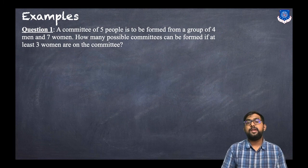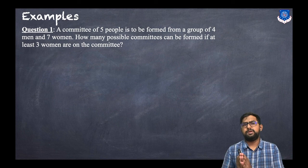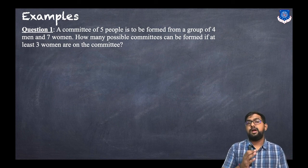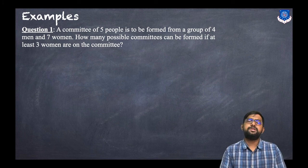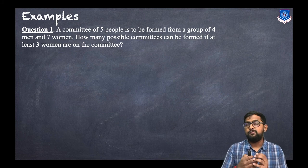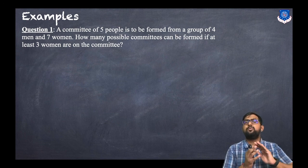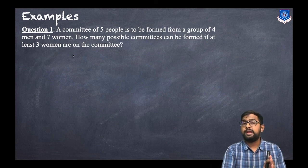Let us discuss an example. A committee of five people is to be formed from a group of four men and seven women. How many possible committees can be formed if at least three women are on the committee? We want to form a committee of five people from four men and seven women, with the condition that there must be at least three women.